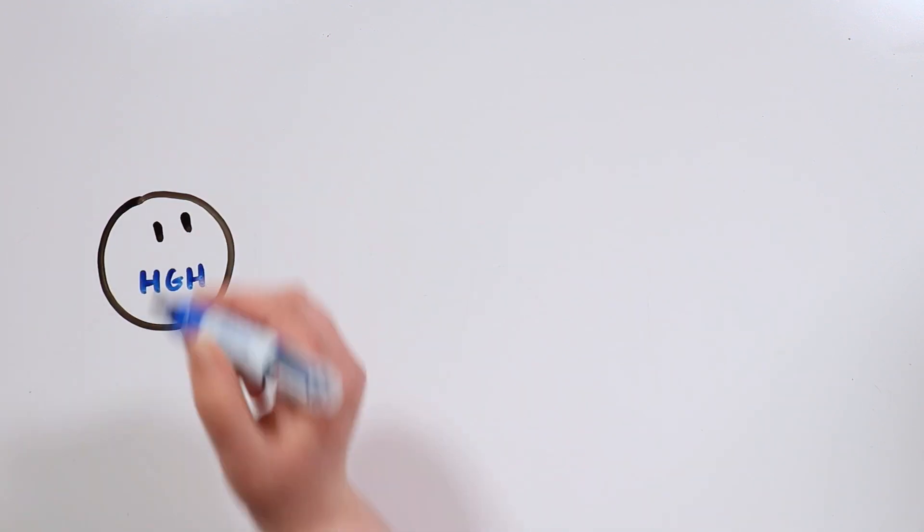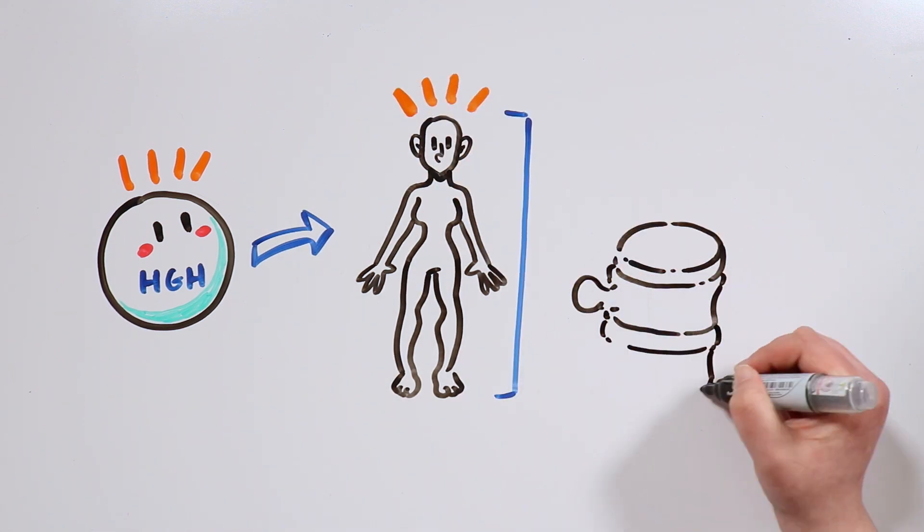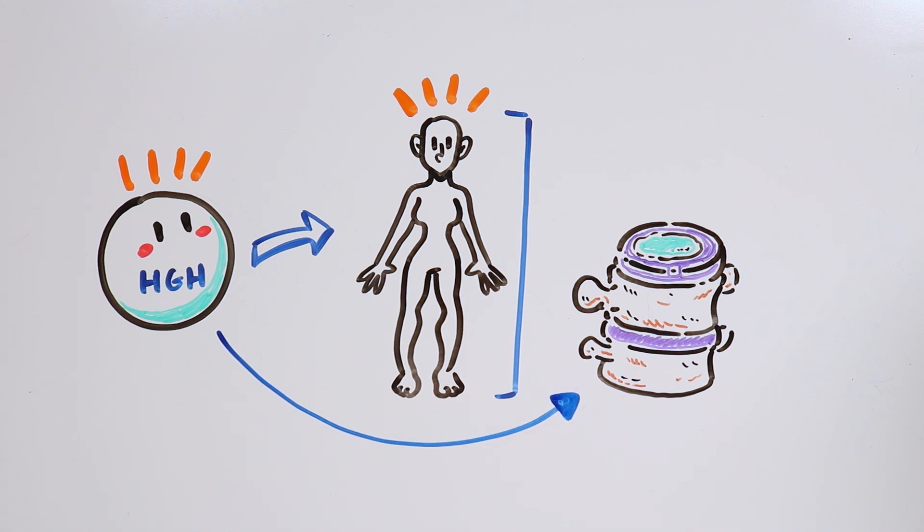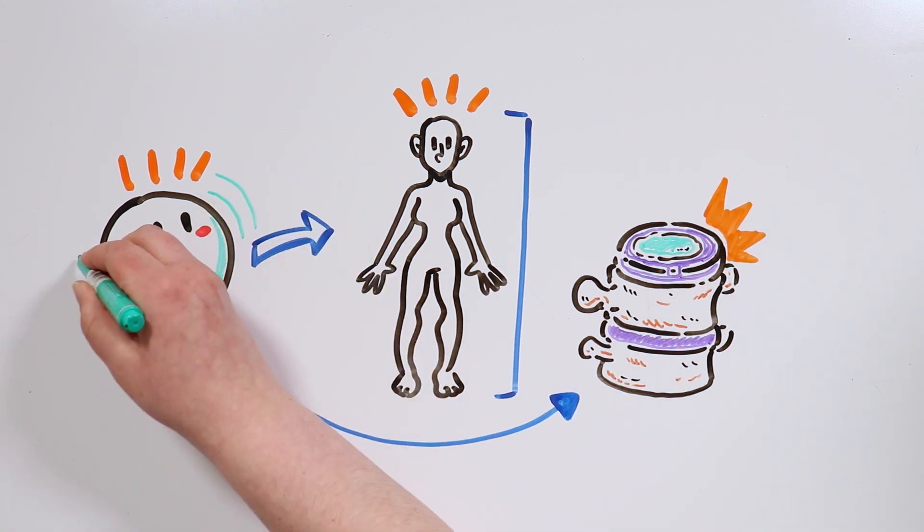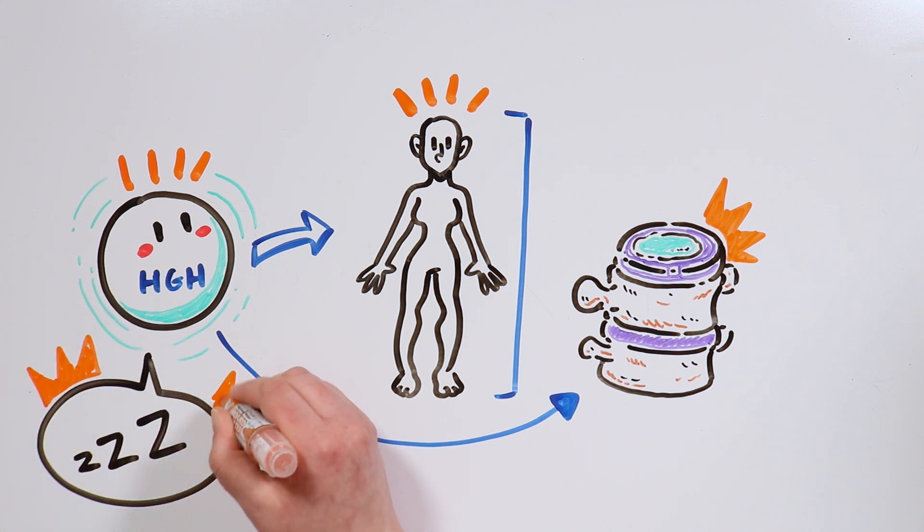We also have to take into account the role played by the human growth hormone in our bodies, which not only makes us taller, but also contributes to the rebuilding and recovery of our cells. This substance is released almost exclusively while we sleep, during the deep sleep phase.